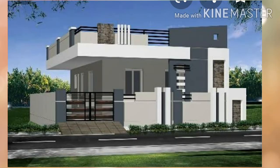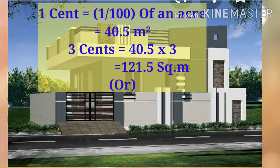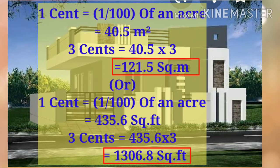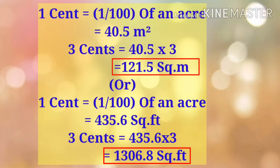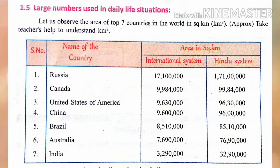Let us consider an independent house where we can find out the area. Let it be constructed in three sets. One set is nothing but one-hundredth of an acre, which is equal to 40.5 square meters. So three sets can be calculated as 121 square meters or 1306 square feet.